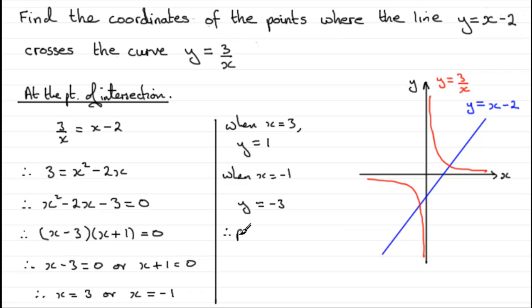So therefore, the points of intersection, in answer to the question, are going to be (3, 1) and (minus 1, minus 3).